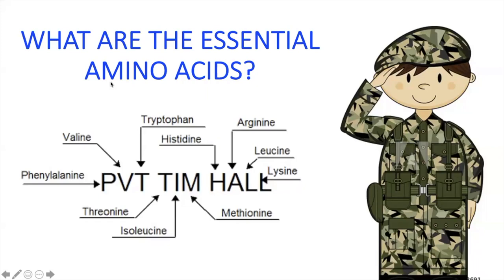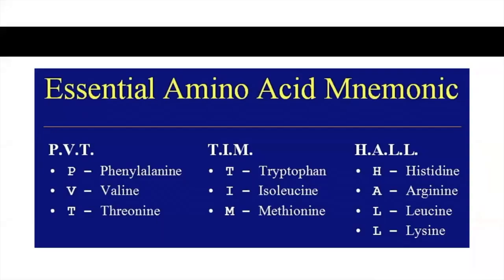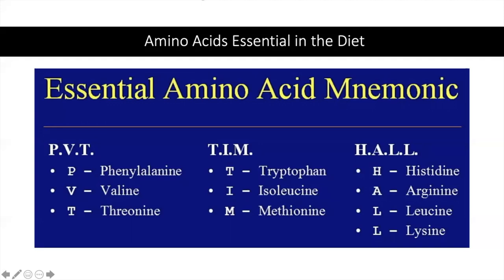The essential amino acids spelled out via Private Tim Hall: PVT stands for phenylalanine, valine, threonine. TIM stands for tryptophan, isoleucine, methionine. HAL stands for histidine, arginine, and leucine — and lysine.